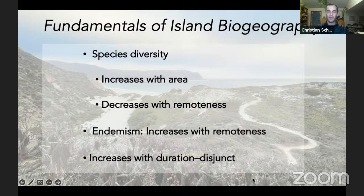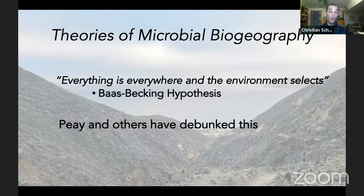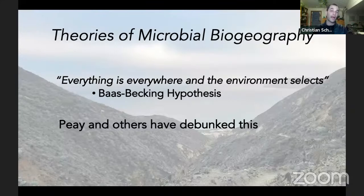Early on there was an idea termed the Baas-Becking hypothesis after its two main authors, summarized by the pithy aphorism: 'everything is everywhere and the environment selects.' The idea was that spores or propagules or mycelium of fungal or microbial organisms were present everywhere over the surface of the globe, and that it was only the particularities of the environment in any given place that selected for the species actually encountered there.